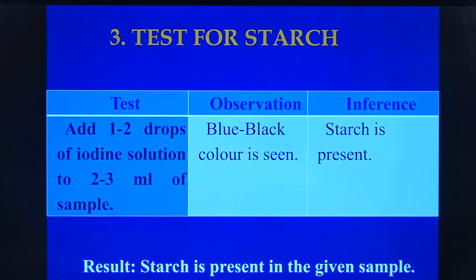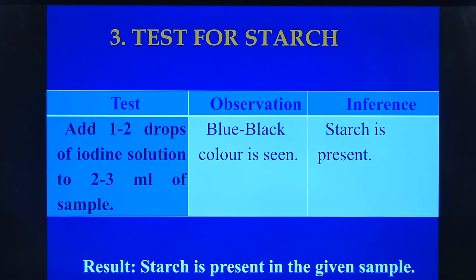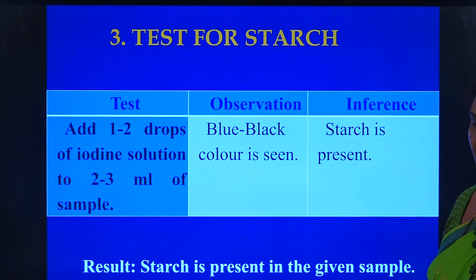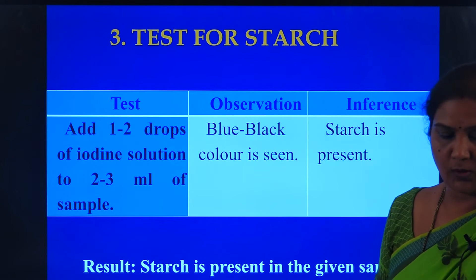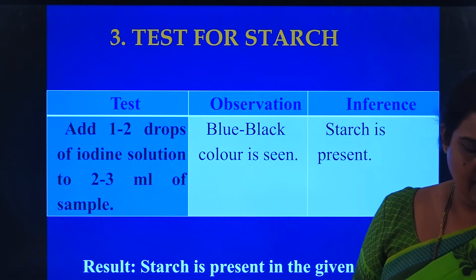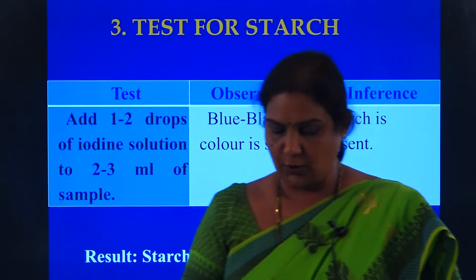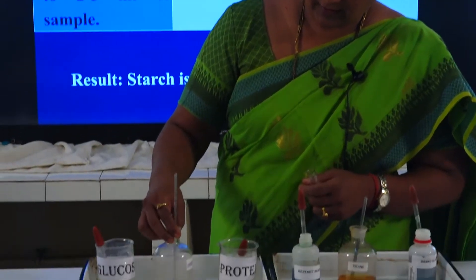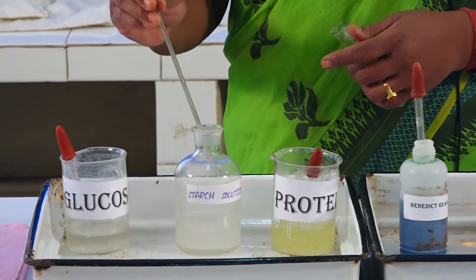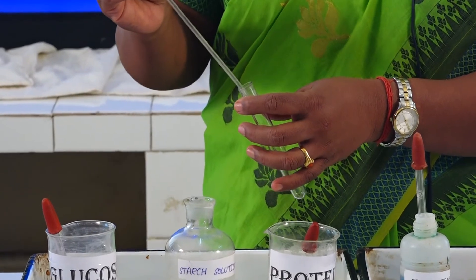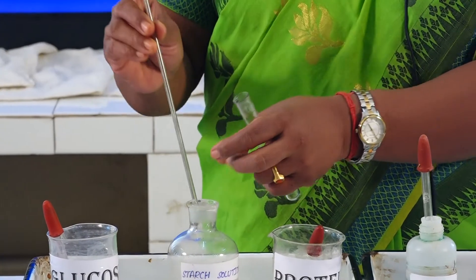Next, one more carbohydrate test — the test for starch. While conducting the test for starch, we will be using iodine solution. It goes like this: take a test tube, add the starch sample, and then we will be taking one or two drops of the iodine solution.